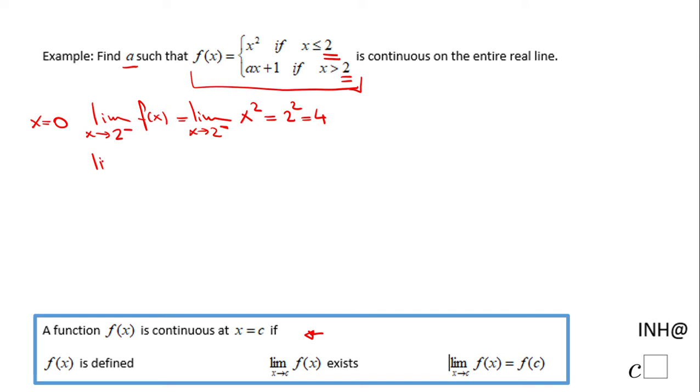Similarly, I'm going to do the limit as x approaches 2 from the right of f(x). For this limit, I'm going to use the second piece, ax plus 1, and I'm going to replace x with 2, so I'm going to end up with 2a plus 1. Now we want the function to be continuous on the entire real line, so that means these two need to be the same.